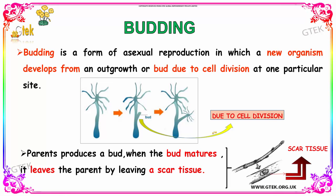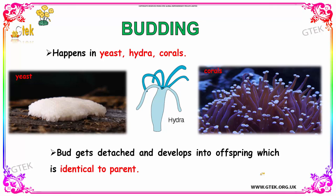Now we are going to see about Budding. Budding is a form of asexual reproduction in which a new organism develops from an outgrowth or bud, due to cell division at one particular site. The parent produces a bud, and when the bud matures, it leaves the parent by leaving a scar tissue, as you can see here. Budding happens in yeast, Hydra, and Coral. The bud gets detached and develops into offspring which is identical to the parent.